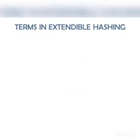Now let us see some of the terminologies used in extendable hashing. The very first thing is directories. These containers store pointers to the buckets. Each directory is given a unique ID which may change each time when expansion takes place. The hash function returns this directory ID which is used to navigate to the appropriate bucket. The number of directories is equal to 2 to the power of the global depth.